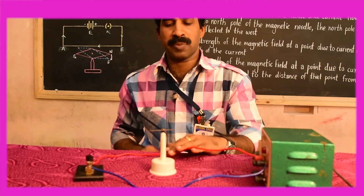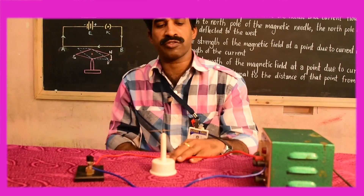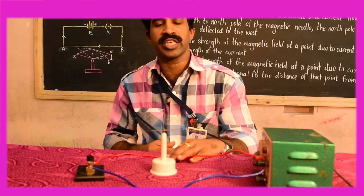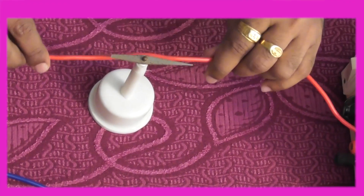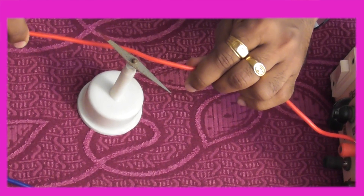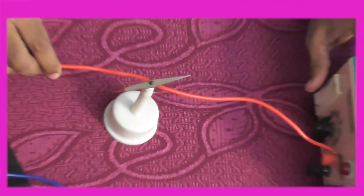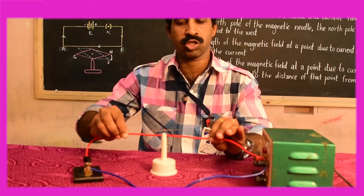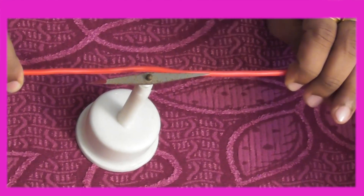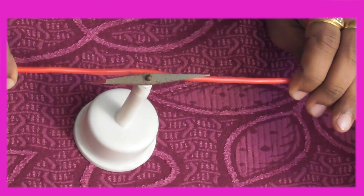Now, if I place the conducting wire below the magnetic needle, you may check the deflection. The north pole of the magnetic needle gets deflected towards the east. You may find out the reason, and in case you don't get it, you may please Google it. The current is flowing from the south pole of the magnet to the north pole, but the conducting wire is placed below the magnetic needle, and so the north pole of the magnetic needle gets deflected towards the east.